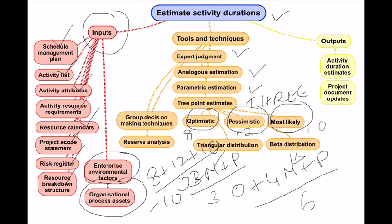Using the beta distribution with the same values — optimistic is 8, most likely is 10, pessimistic is 12: (8 + 4 × 10 + 12) / 6 = (8 + 40 + 12) / 6 = 60 / 6 = 10. Both distributions give 10 hours in this balanced example.